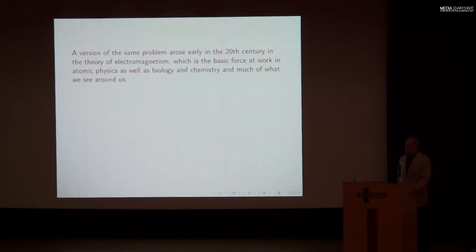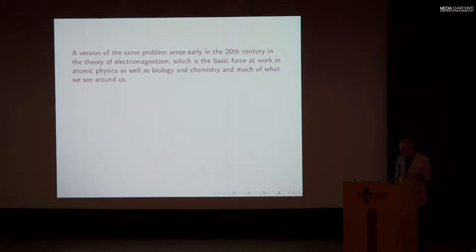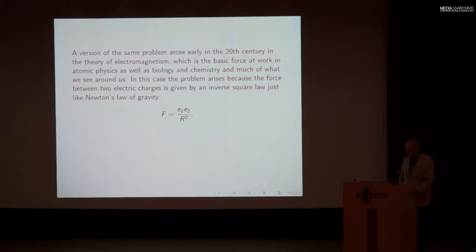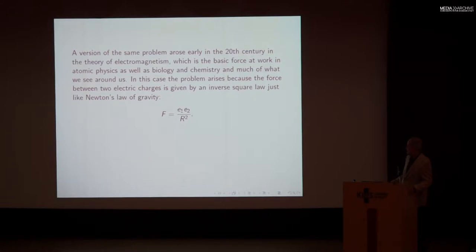There actually was a version of the same problem early in the 20th century in the theory of electromagnetism, which, as David Gross also mentioned, is the basic force at work in most of what we see around us — atomic physics, biology, chemistry, and most of the world we see in everyday life. The force between two electric charges is given by an inverse square law that's a lot like Newton's law of gravity, except that instead of masses in the numerator, we have electric charges, but there's the same basic one over distance squared in the denominator.